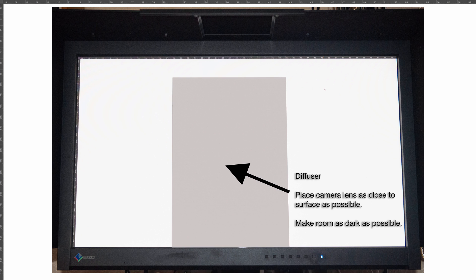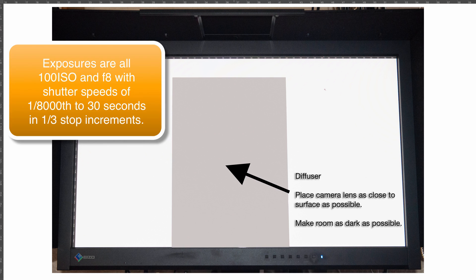I'm using a 24-70 f/2.8 lens on the Nikon D800E, focused at infinity — so I'm not trying to resolve individual pixels on the screen. The diffuser is there to scramble the light coming off the monitor, because of the viewing angle disparity between the pixel array on the screen and the angle of view of the lens. I'm going to take pictures of this screen with the front element of the lens as close to the diffuser as possible, in one-third stop increments all the way from 30 seconds to 1/8000th of a second at ISO 100, f/8.